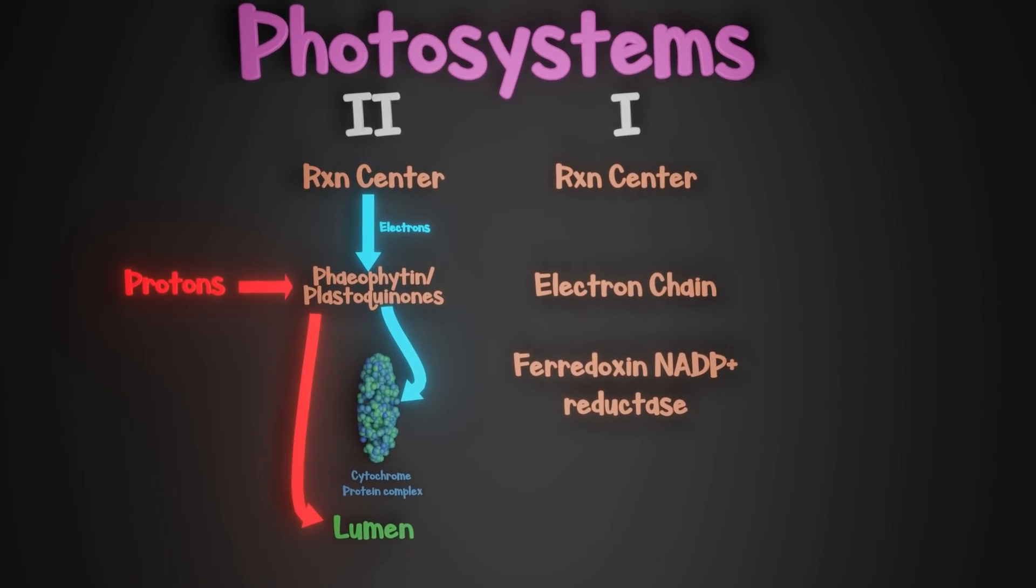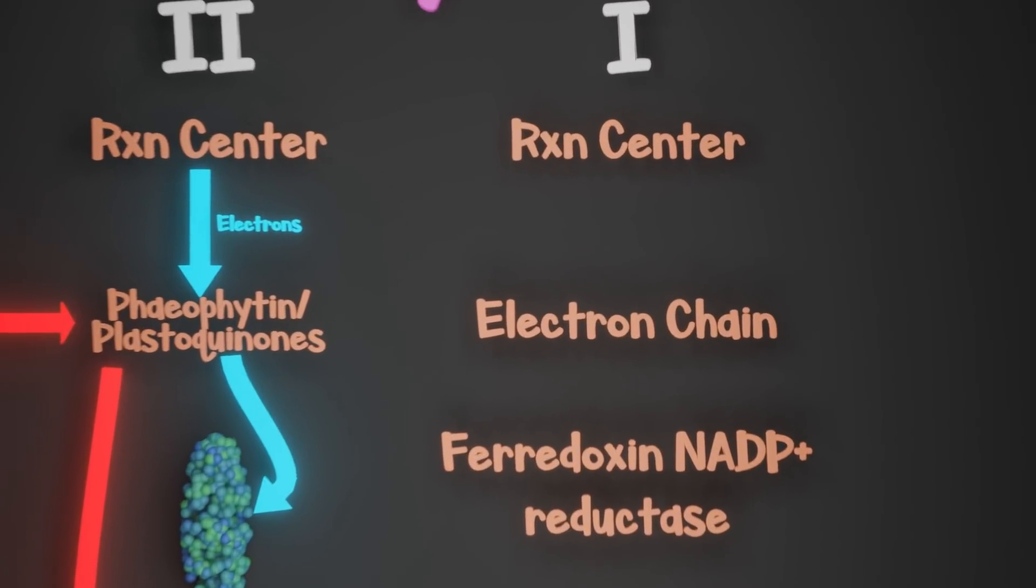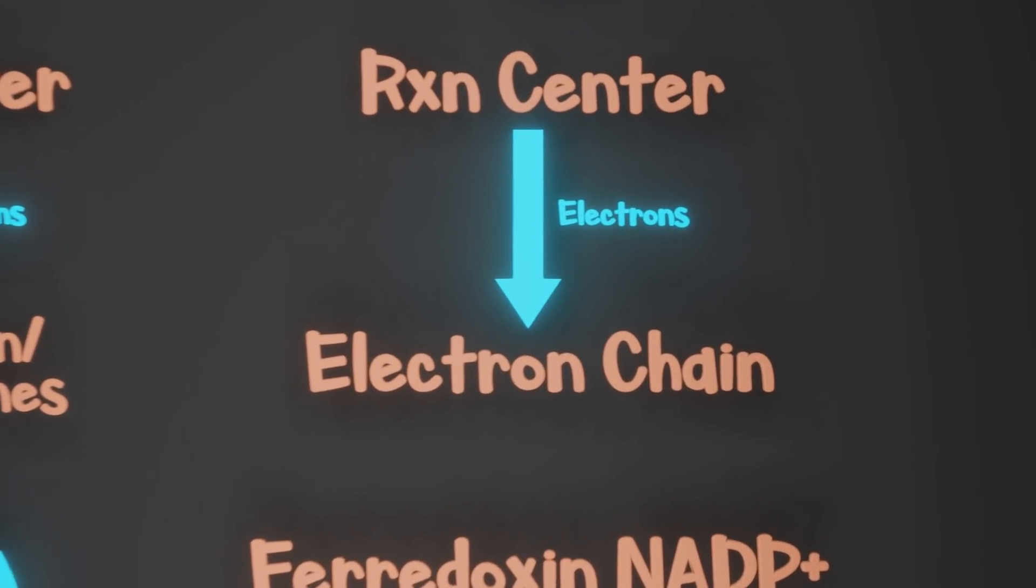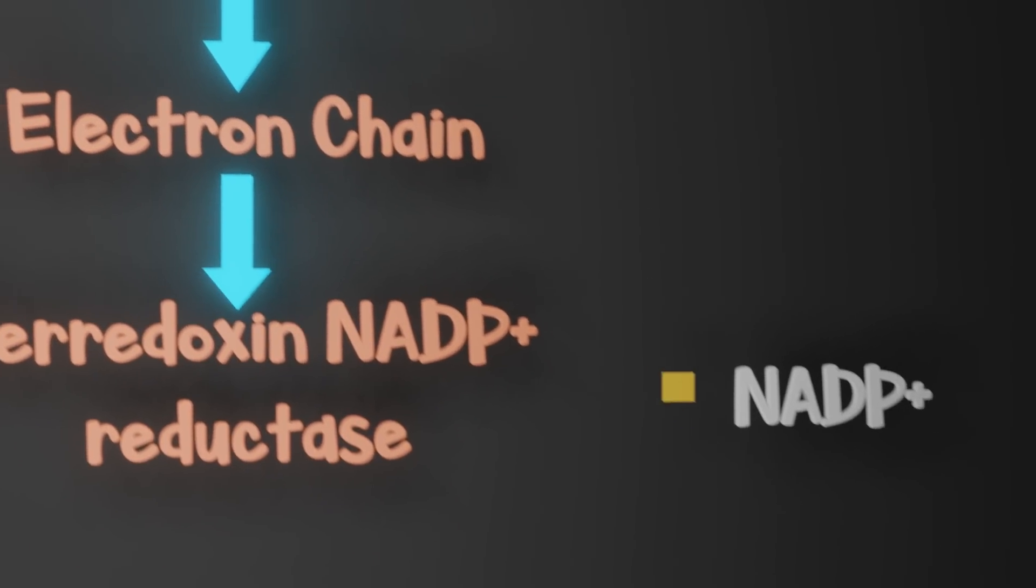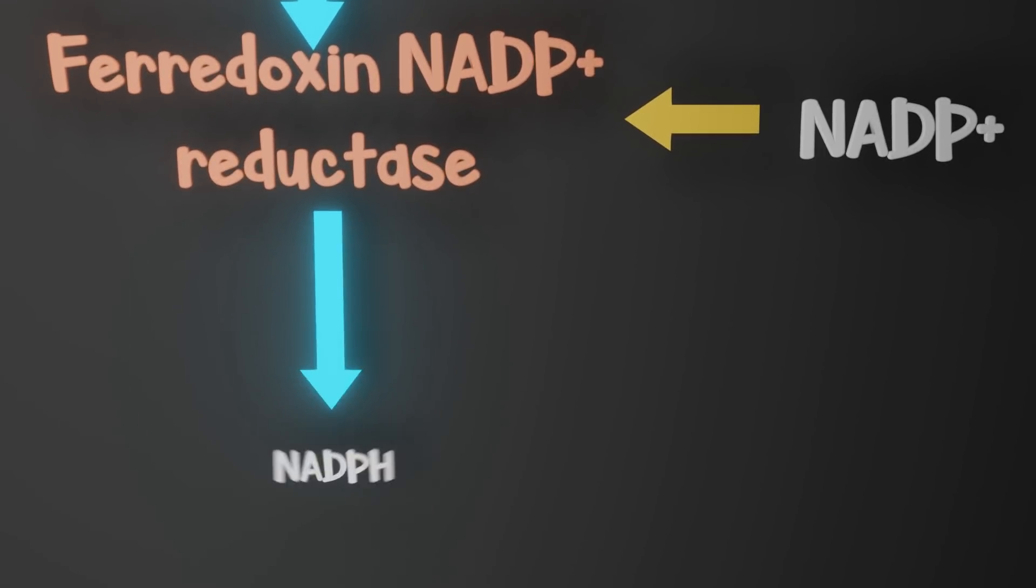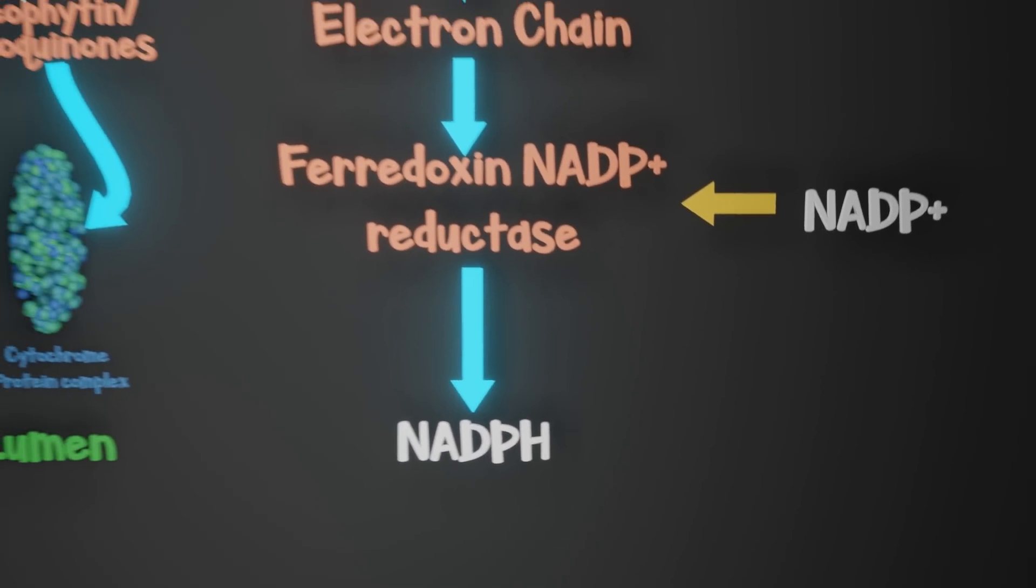The second photosystem, photosystem I, uses the electrons freed from its reaction center to reduce NADP-positive to NADPH. Photosystem I, however, relies on photosystem II.